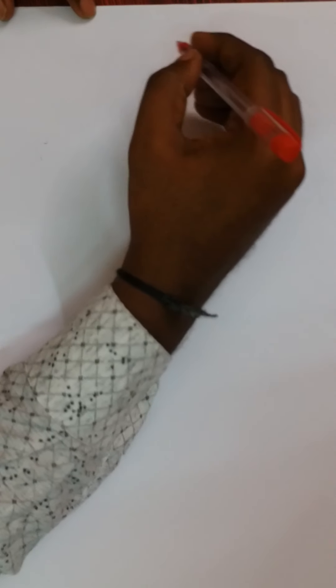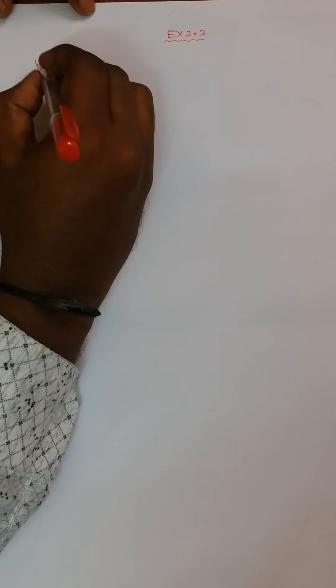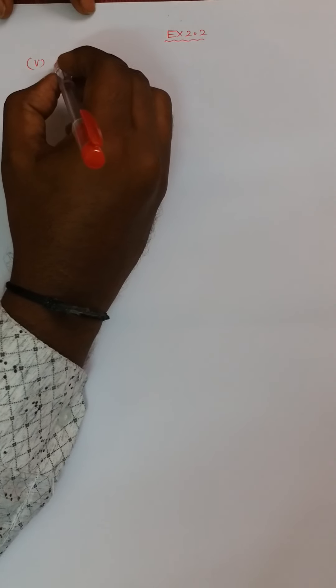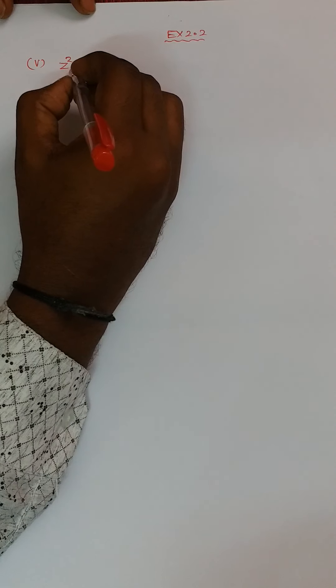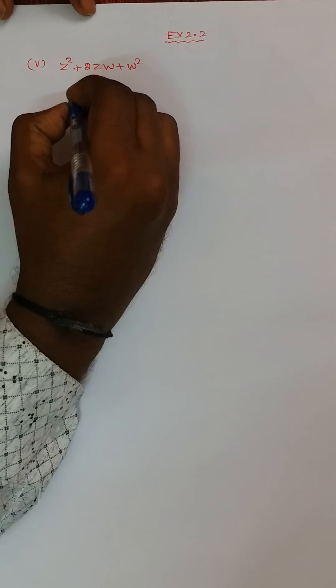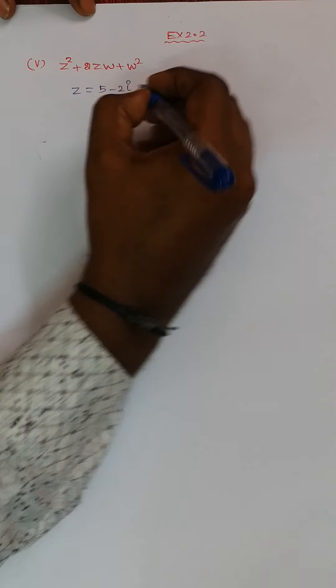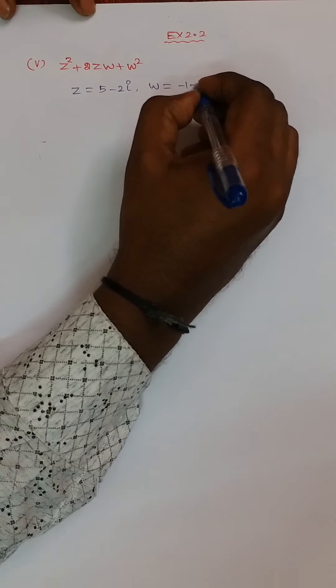Good morning students. Today we are going to discuss Exercise 2.2, question number 5: Z² + 2ZW + W². The Z value is equal to 5 minus 2i and the W value is equal to minus 1 plus 3i. Now I am going to substitute these two values into the question.